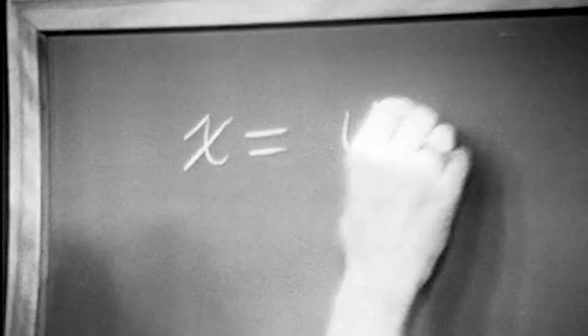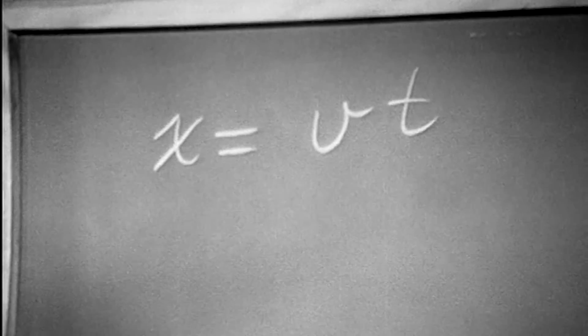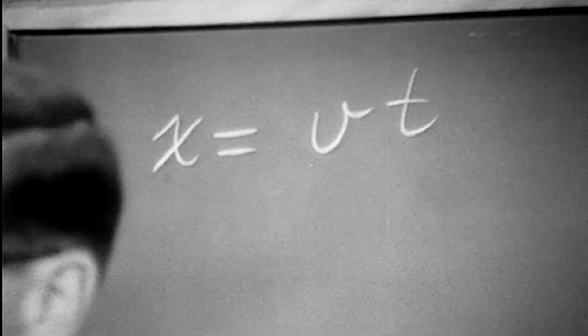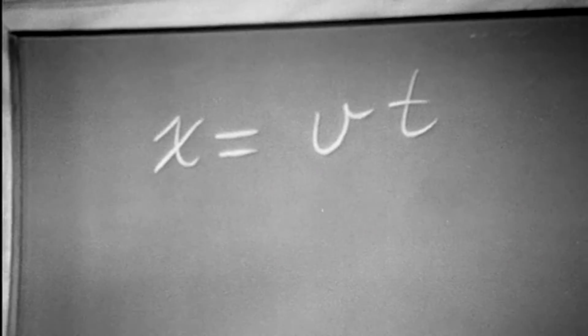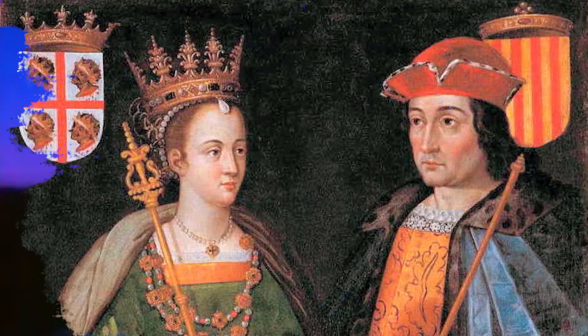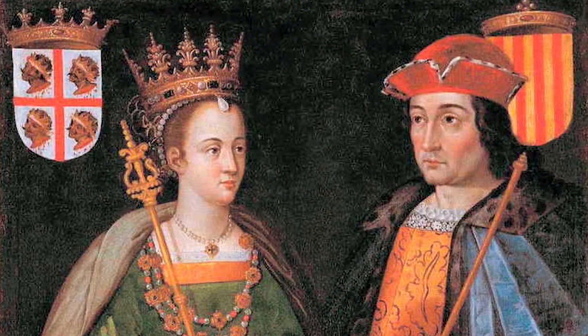The letter X became the standard symbol for representing the unknown in mathematical texts for the next 600 years. It might sound a bit far-fetched, but the whole phenomenon of X symbolizing mystery in the West may simply be the result of 12th century Spaniards not being able to say 'Sh'.